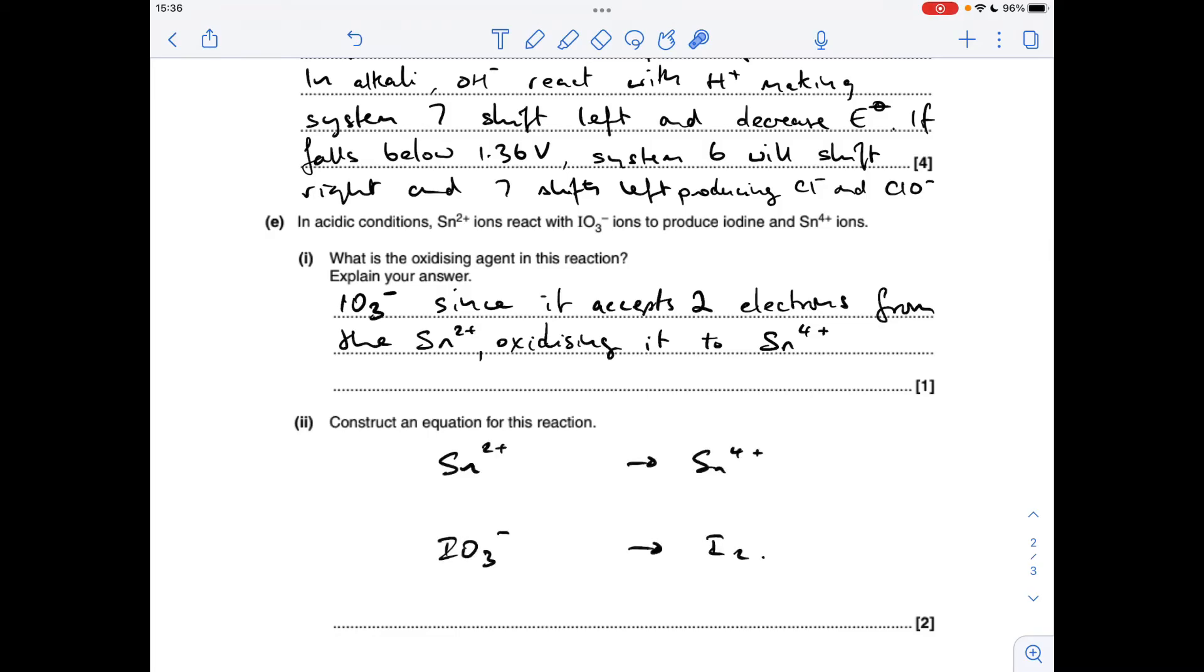The final part, we've got to construct the overall equation for this reaction. I'm breaking it down into the two half equations first and then I'll put them together to form the redox reaction. The tin one's quite easy because all we've got to do is put some electrons in. Tin 2+ is going to tin 4+, so it's obviously lost two electrons to be oxidised in that way, so two electrons go on the right.